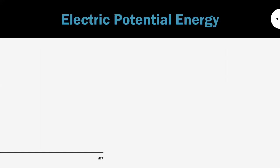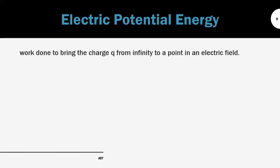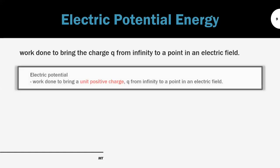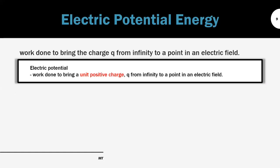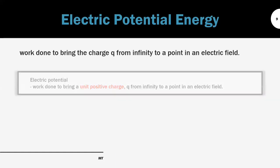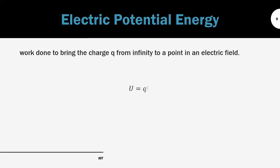Lastly, we look at electric potential energy U, defined as the work done to bring a charge q from infinity to a point in an electric field. Comparing with electric potential, which uses a unit positive charge, electric potential energy refers to the actual charge q. Therefore, the formula for electric potential energy is U equals qV, which equals qQ divided by 4πεr. That's all for this video, thank you.